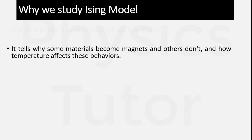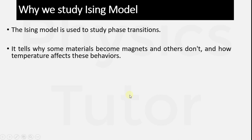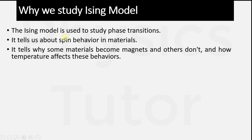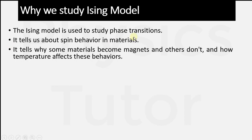Why do we study the Ising Model? First, it is used to study phase transition. Phase transition tells us about the energy of particles which changes with respect to changes in temperature or different conditions. When we increase temperature, particles start vibrating more violently, their motion becomes more abrupt, and their energy changes — this is phase transition. Second, it tells us about the spin behavior in a material.